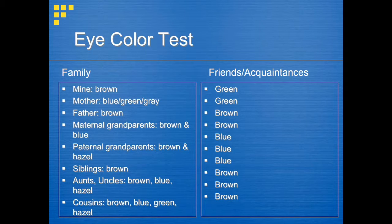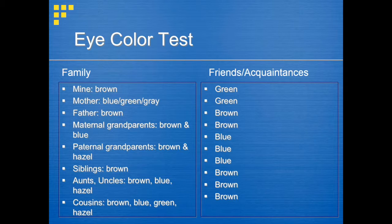Do your siblings have the same eye color or different than you? What are other characteristics that you and your family members have in common, like hair color and type, height, and skin color? Why do you think some characteristics are more common than others? How are these characteristics inherited?